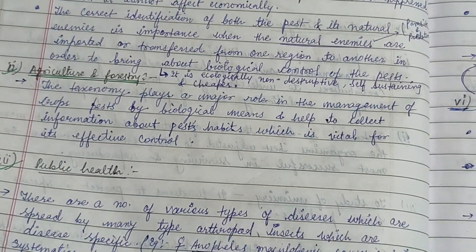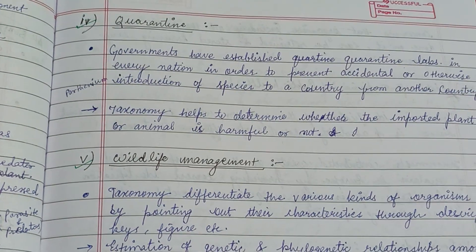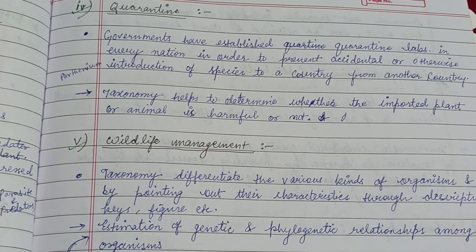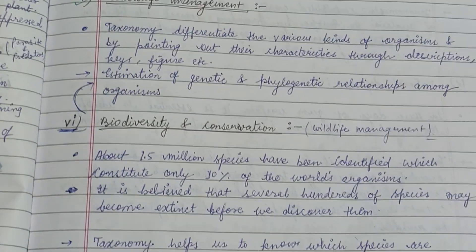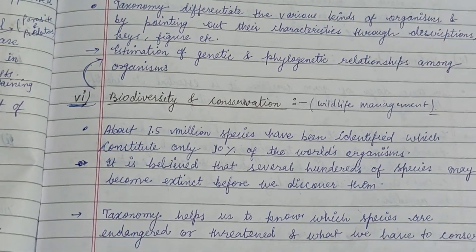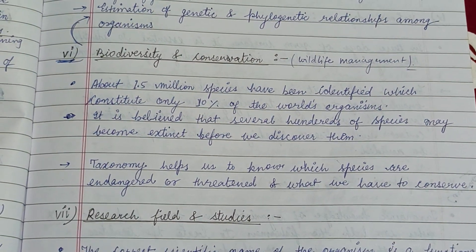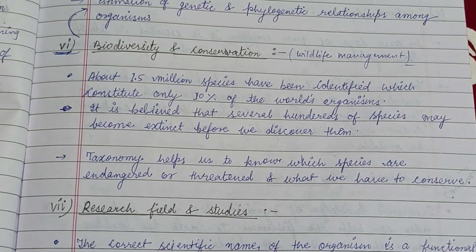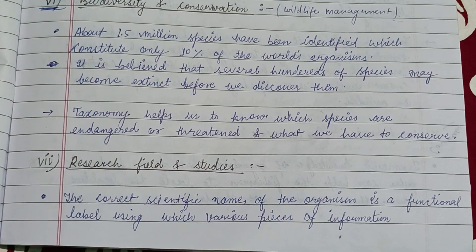Other applications include agriculture and forestry, public health, and quarantine — where taxonomy helps determine whether an imported plant or animal is harmful or not. Wildlife management and biodiversity and conservation are also important areas. About 1.5 million species have been identified, which constitute only 10% of the world's organisms.